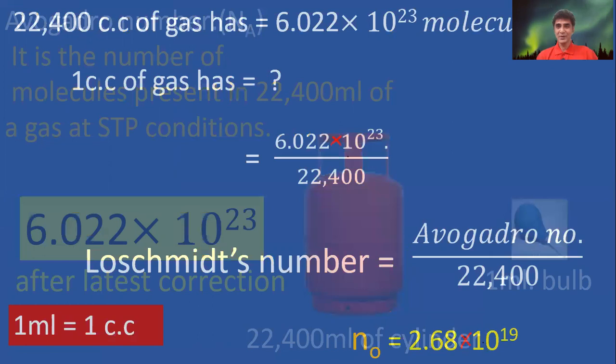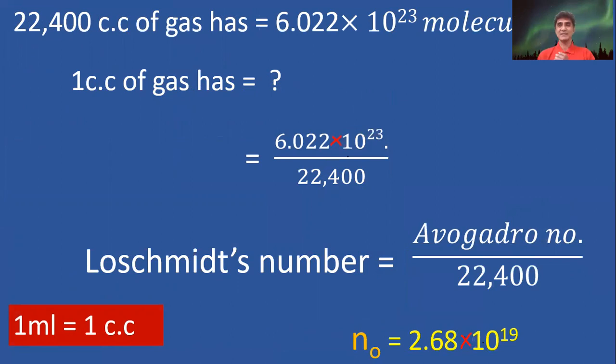Now, let us compare Avogadro number and Loschmidt's number. Let us see the first statement. 22,400 ml of gas—1 ml means 1 cc—so 22,400 ml means 22,400 cc. That contains 6.022 × 10²³ molecules.